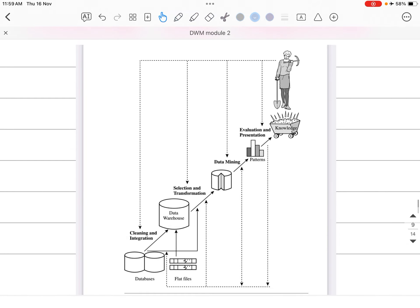So this is the diagram for the KDD process. You have a database, then you have data warehouse. Inside the database the data is cleaned and integrated. Missing data and all that will be removed. Then you have selection and transformation.